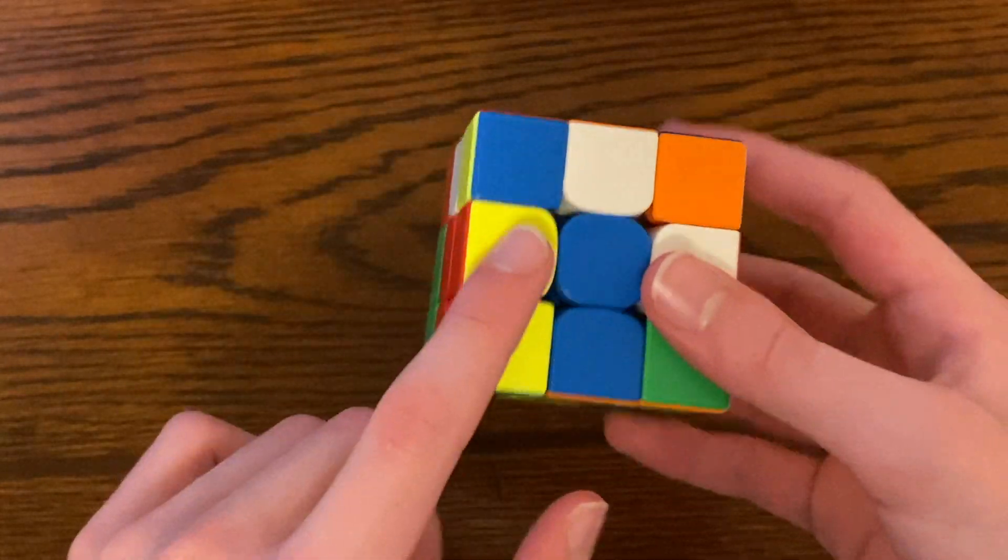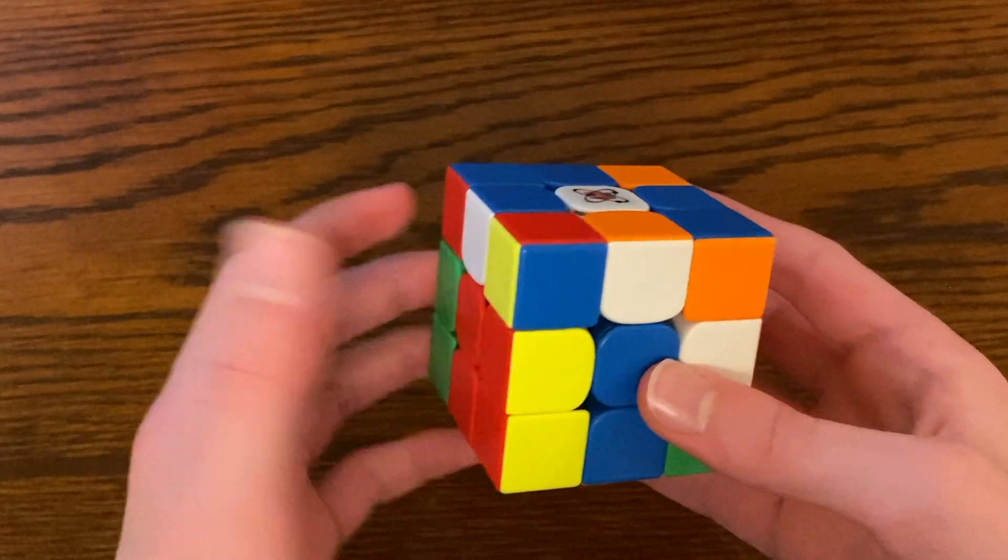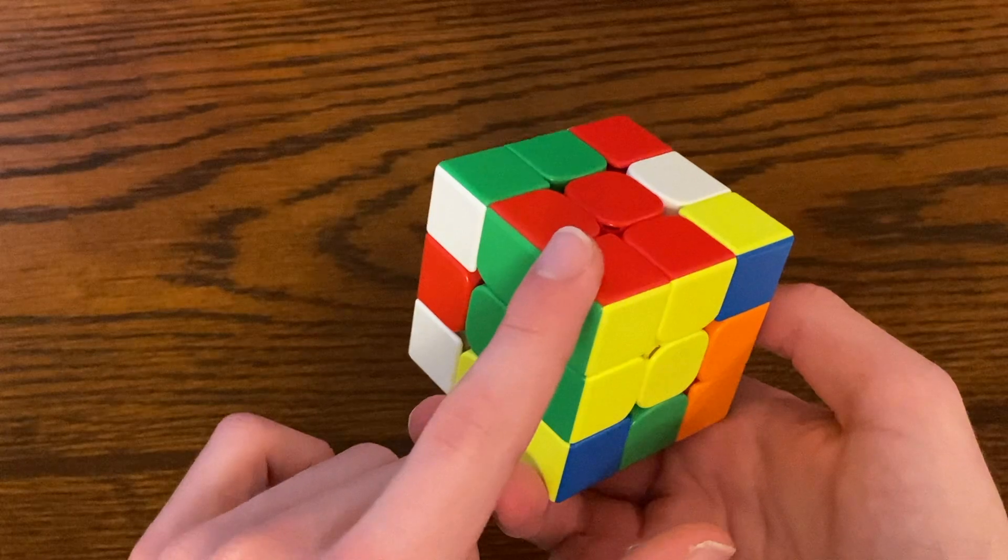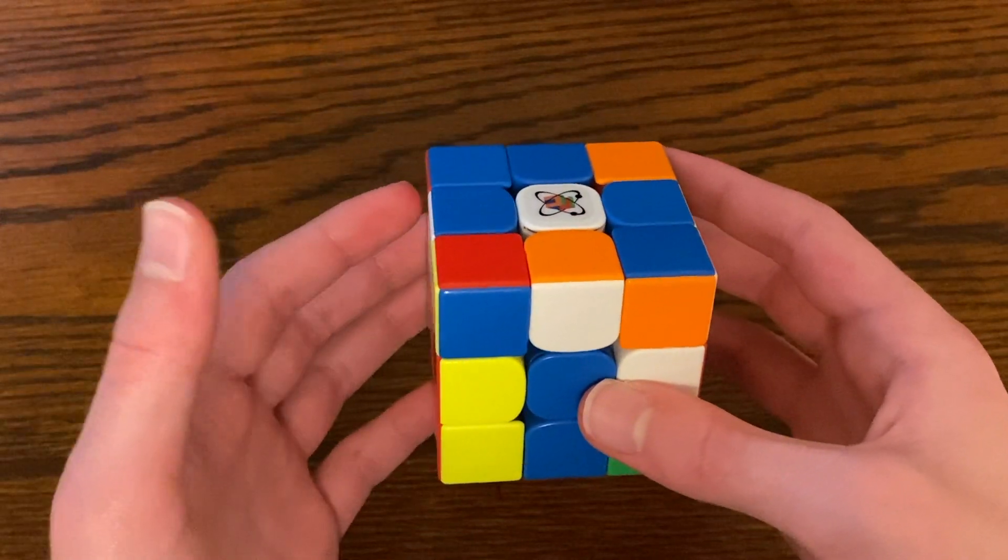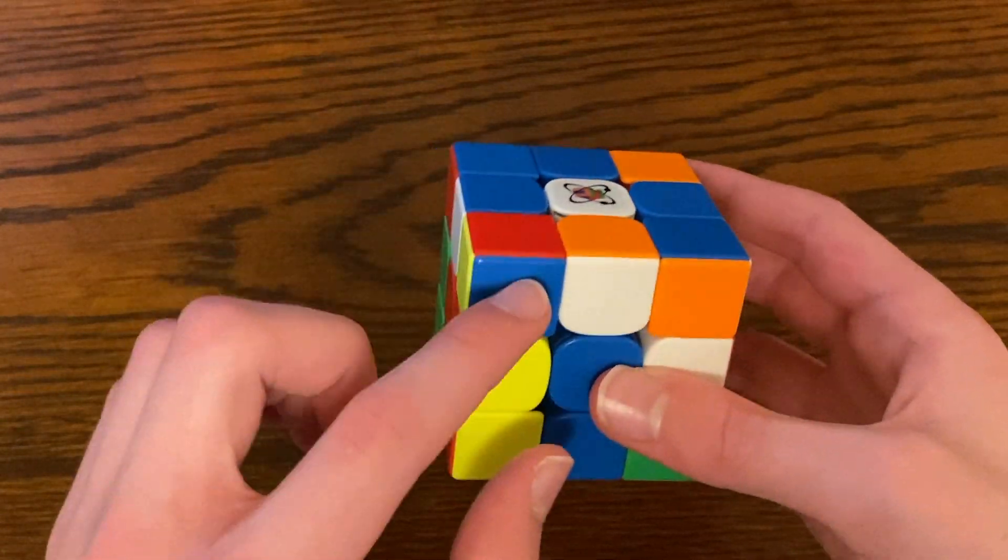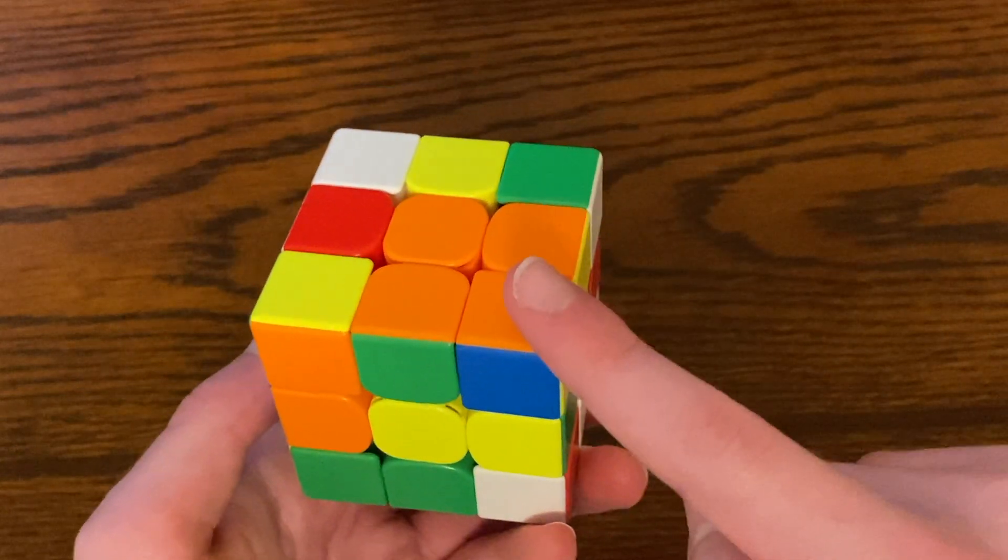During inspection, I saw the cross pieces were here, here, here, and here. I saw there was a one-move 2x2x2 block right here, and I ended up predicting two and a half pairs, one of them being the red-blue, and the other one being this corner right here.